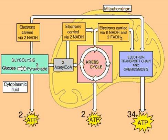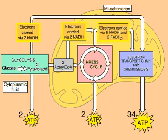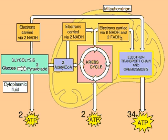Most of the energy harvested from organic molecules during glycolysis and the Krebs cycle is stored in NADH and FADH2. These molecules give up their high-energy electrons in the third phase of cellular respiration, electron transport and chemiosmosis, where most of the cell's ATP fuel is produced.